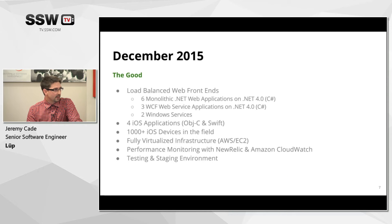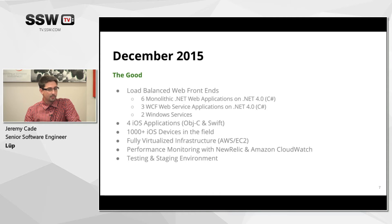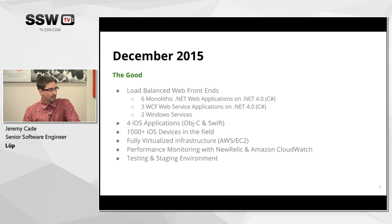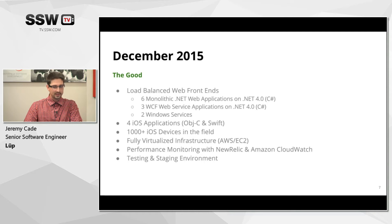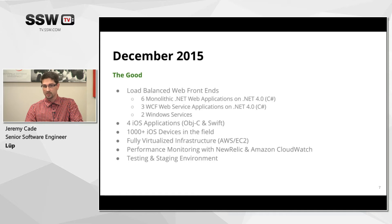When I started with Loop about three months ago, we had a fairly solid .NET stack: a large number of load-balanced web frontends with six large monolithic .NET applications built organically over five years. We had a number of WCF applications — all our APIs were sitting on top of WCF — so there was SOAP, XML, and JSON, which was an absolute nightmare to deal with. Plus a stack of Windows services to run background tasks.